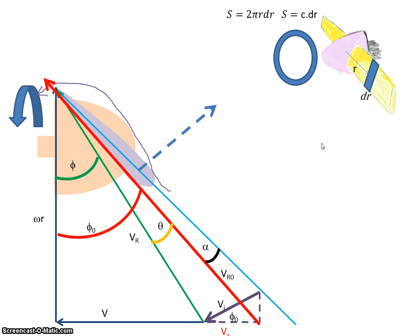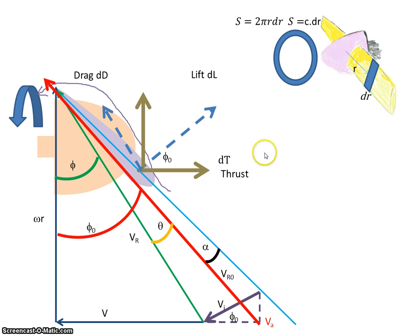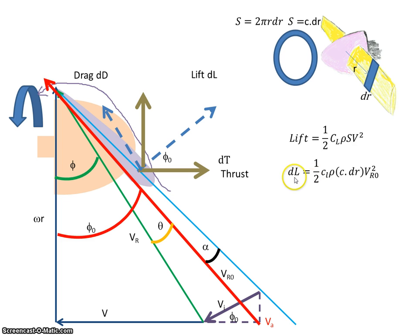If the air goes through, the propeller will generate some lift on the small element. That lift will be broken into thrust and torque. The general equation for lift is half the coefficient of lift times rho times s times v squared. For this small section, the area s is c times dr, and the velocity is vr0, so that gives us our lift.